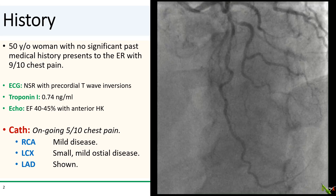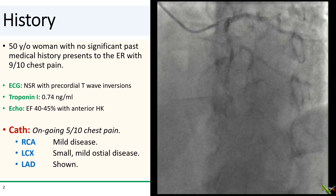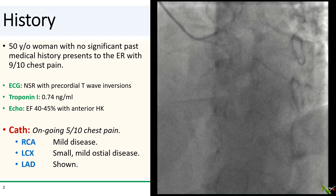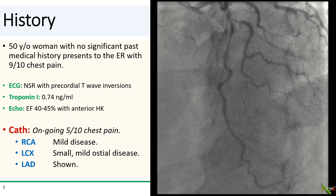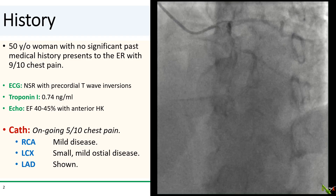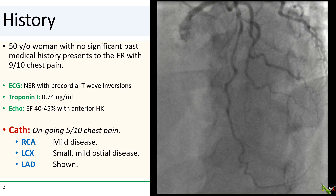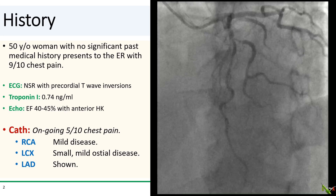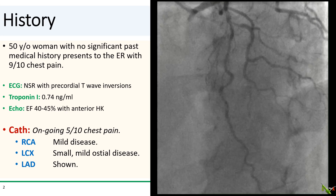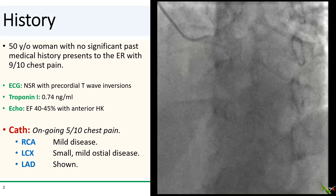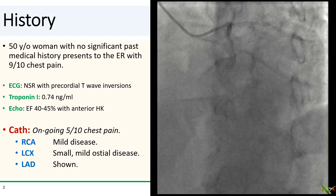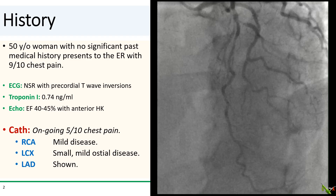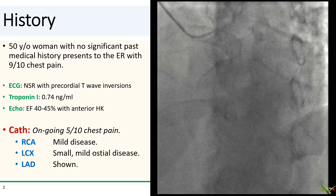In the lab, she had ongoing 5 out of 10 chest pain. The RCA and circumflex both had only mild disease. The LAD is shown, and we see a severe stenosis at the ostium of a very large second diagonal branch, as well as a haziness in the mid-LAD.